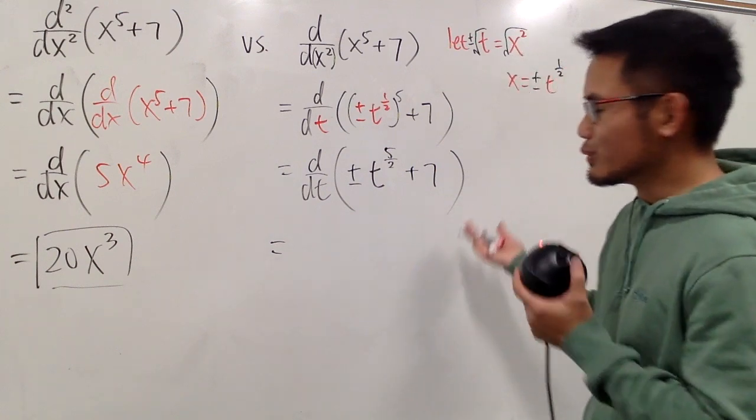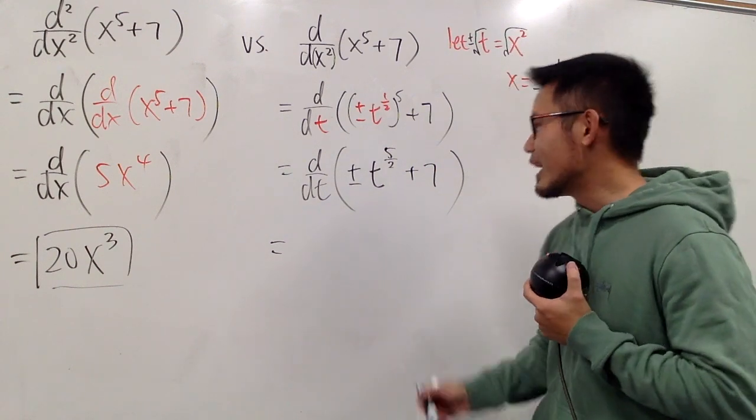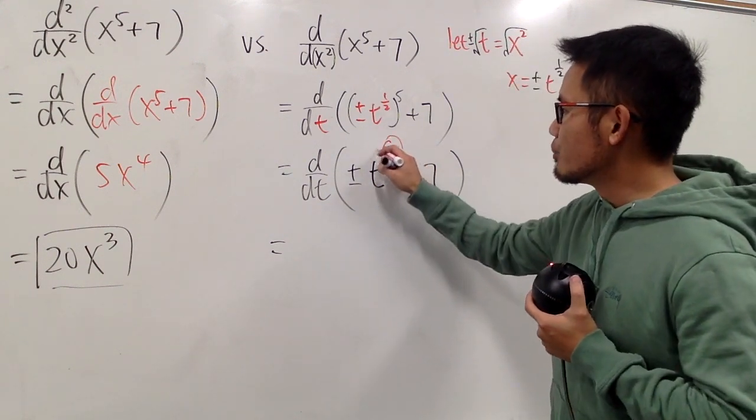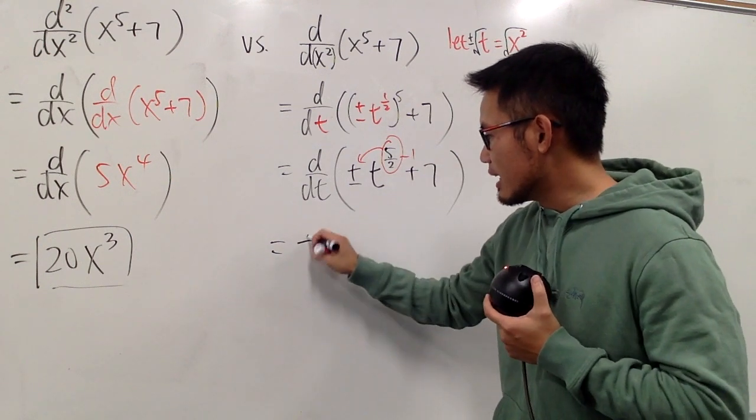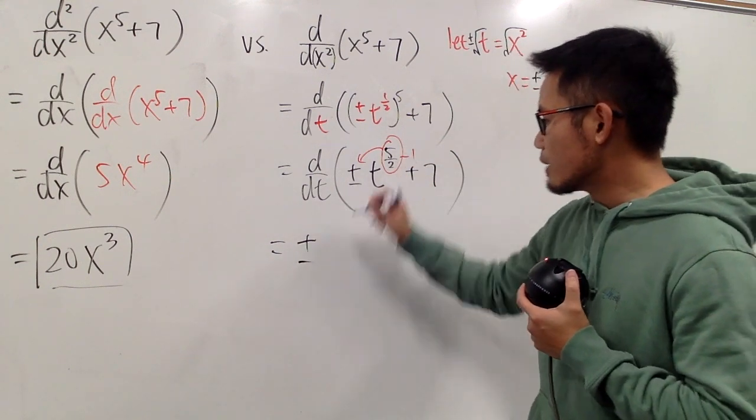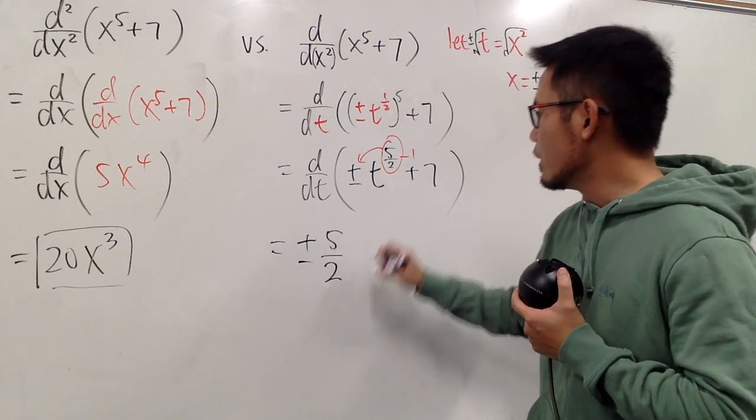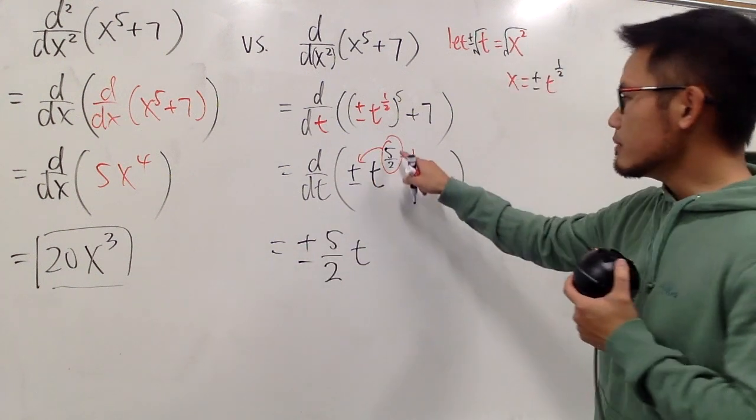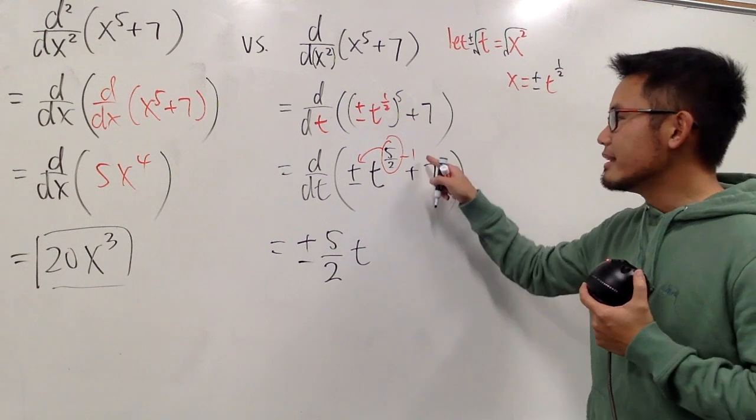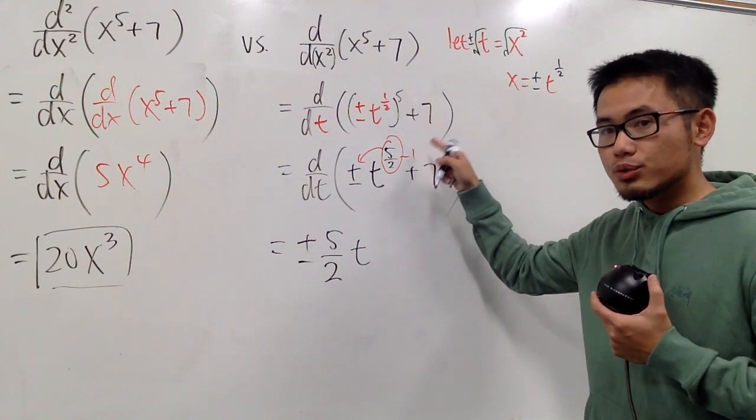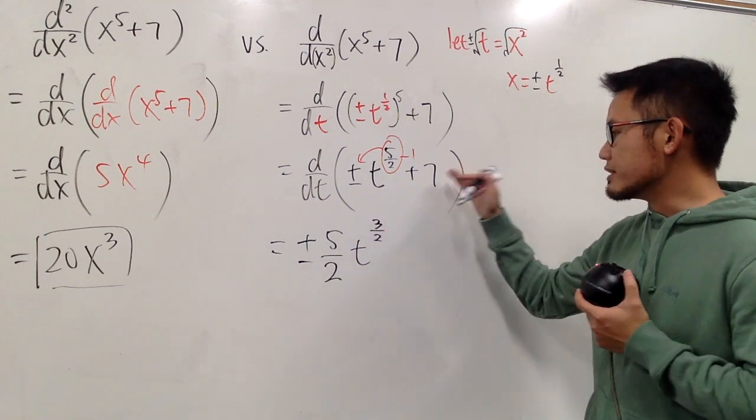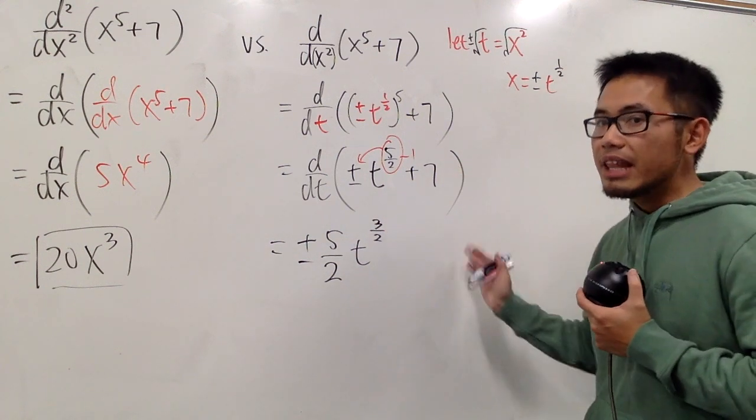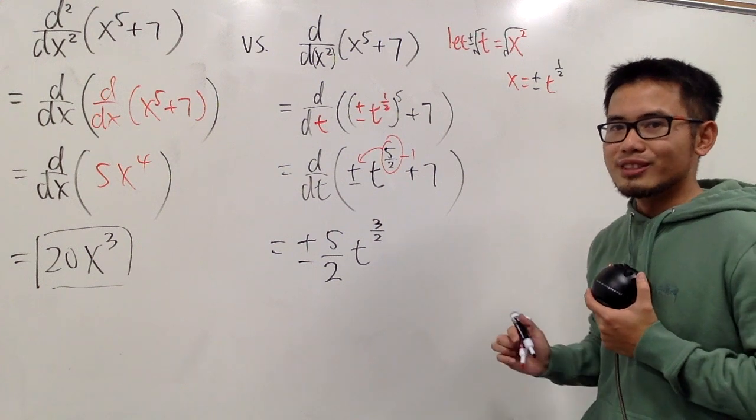Now we can just do the usual derivative, namely the power rule. We can take this, bring to the front, and then minus one. So we will have plus minus, and that will be 5 over 2, and we have t, 5 over 2 minus 1, which is the same as minus 2 over 2. That's going to give us positive 3 over 2. And the derivative of 7 is going to be 0. So this is it at the moment, but is this it for the final answer?